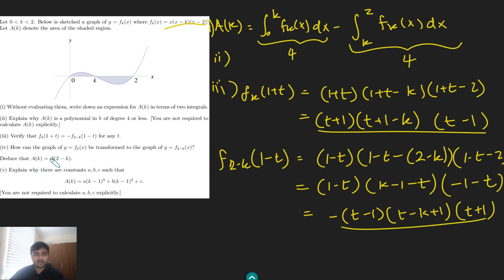Okay, cool. Part, or the remaining part of part 4, deduce that ak equals a(2-k). So, oh no, sorry, I misread that. Sorry, the start of part 4, how can the graph of y equals fk(x) be transformed to the graph of y equals f(2-k)(x)? Now this, we're going to use part 3 to help us. And if you've not seen this trick before, this might seem pretty remarkable.